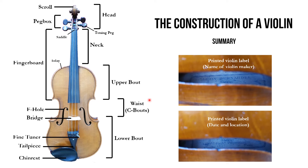Here you can see the name of the violin maker — here it is Leon Bernadel. And if you look at the lower part, here you can see the date and location: it was 1923 and it was made in Paris.